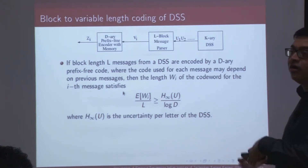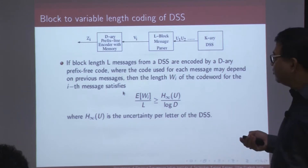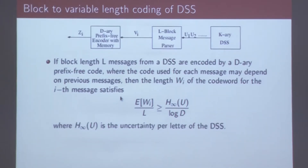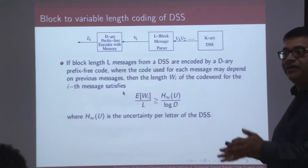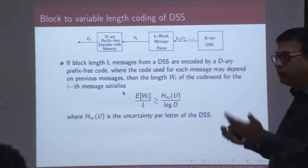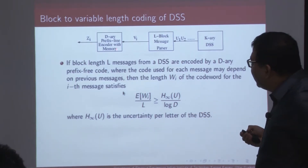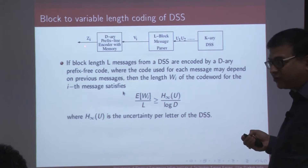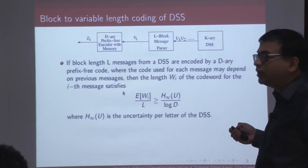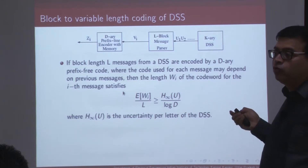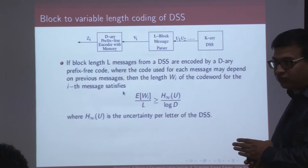What is the difference from the discrete memoryless case? If you recall Huffman coding or Shannon-Fano coding, these were examples of prefix-free block-to-variable encoding where bits were coming out from a discrete memoryless channel and we were mapping them based on probabilities. Here, we are going to use a prefix-free encoder; however, this encoder is going to utilize the inherent memory in the source.